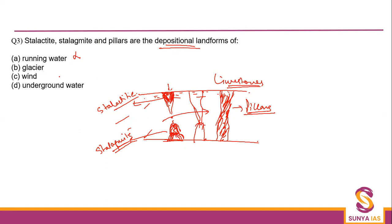When these stalactites and stalagmites grow over a long period of time, they eventually meet and form pillars. These depositional landforms are not formed by running water, wind, or glaciers — they are formed by underground water. This is the karst topography. Because of underground water, all these landforms are formed. So the correct option is option D — underground water.